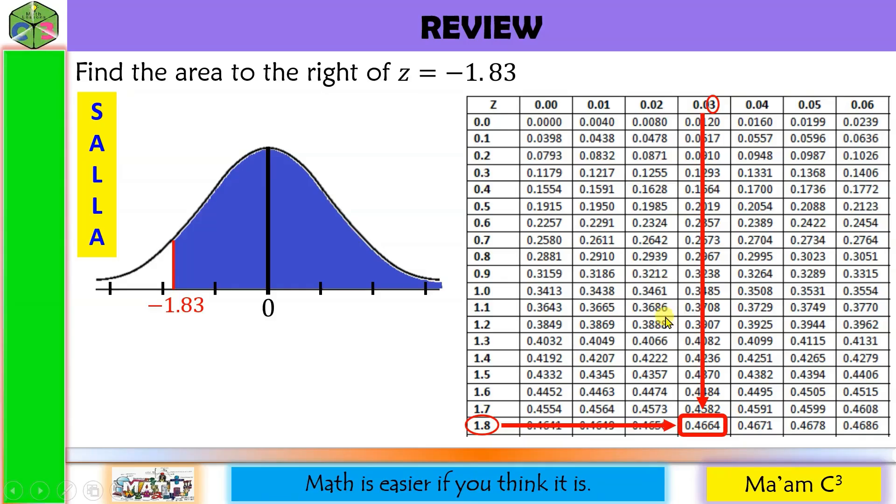And the area is 0.4664. Remember, the area given by this table is from the mean to a specific Z value. So this 0.4664, let us label step 4. That would be from the mean to negative 1.83. Area is always positive. Even though it is on the left side of the mean or on the right side of the mean, it's still always positive. It's a probability. There is no negative probability.